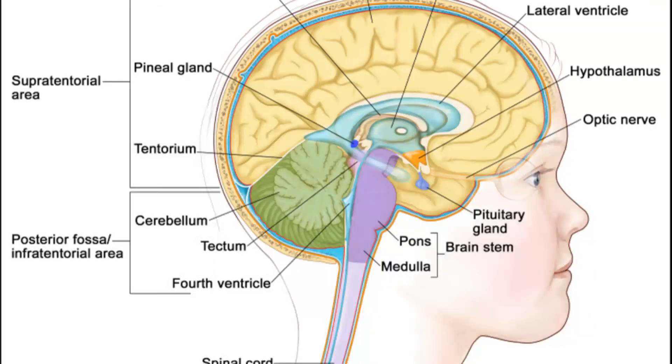Brainstem gliomas can lead to ataxia, cranial nerve palsy, and hydrocephalus if they compress on the fourth ventricle. Some cranial nerves arise from the brainstem, so you can have palsies, etc. The most common location is pontine and the least common is the medulla.